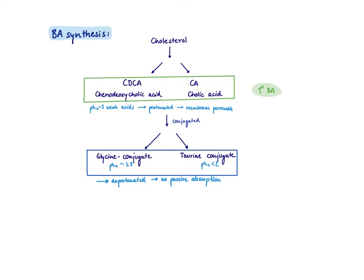Where do bile acids come from? They are synthesized in the liver from cholesterol. The first bile acids that you make are CDCA — chenodeoxycholic acid — and cholic acid. These are referred to as our primary bile acids.